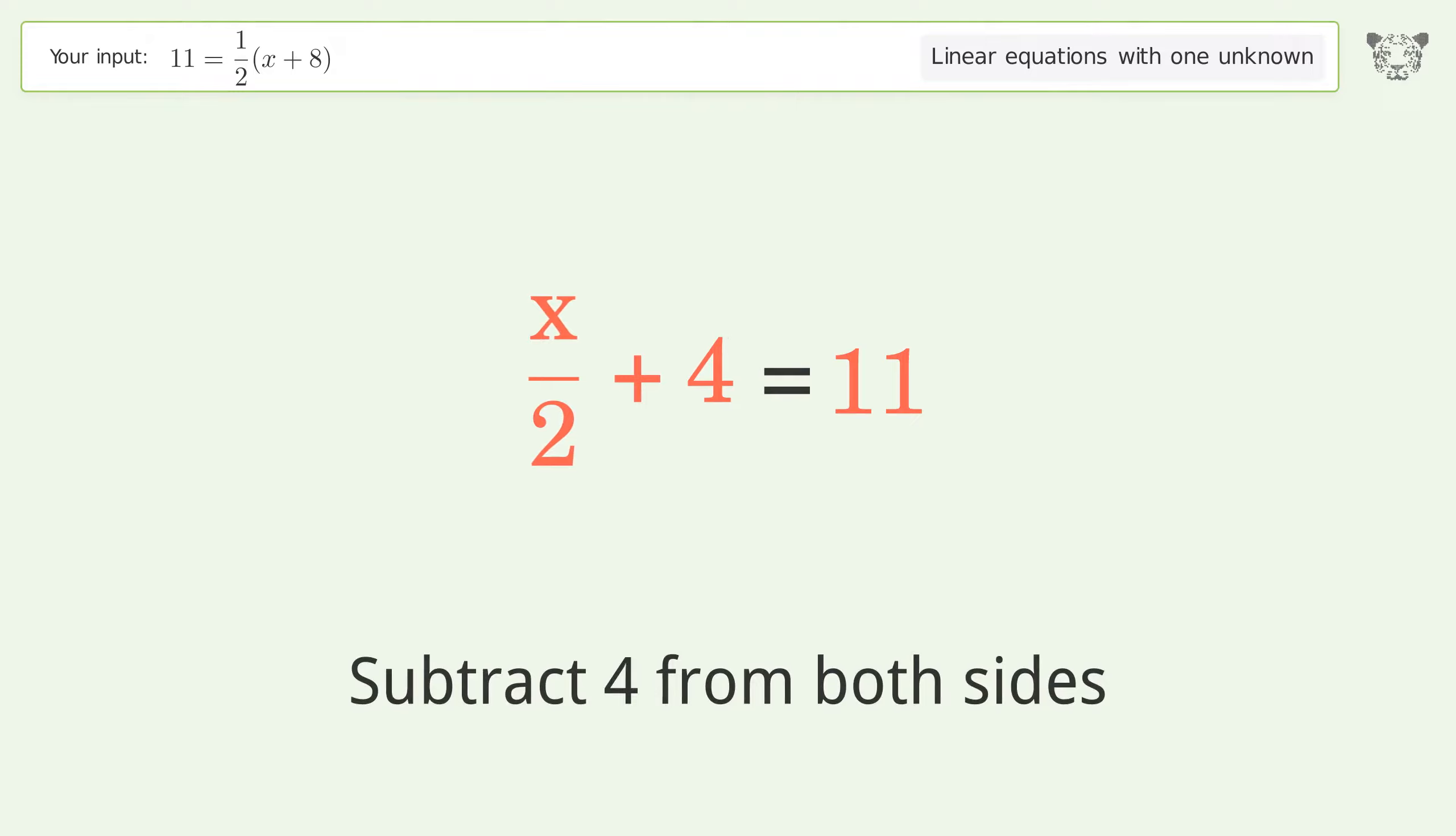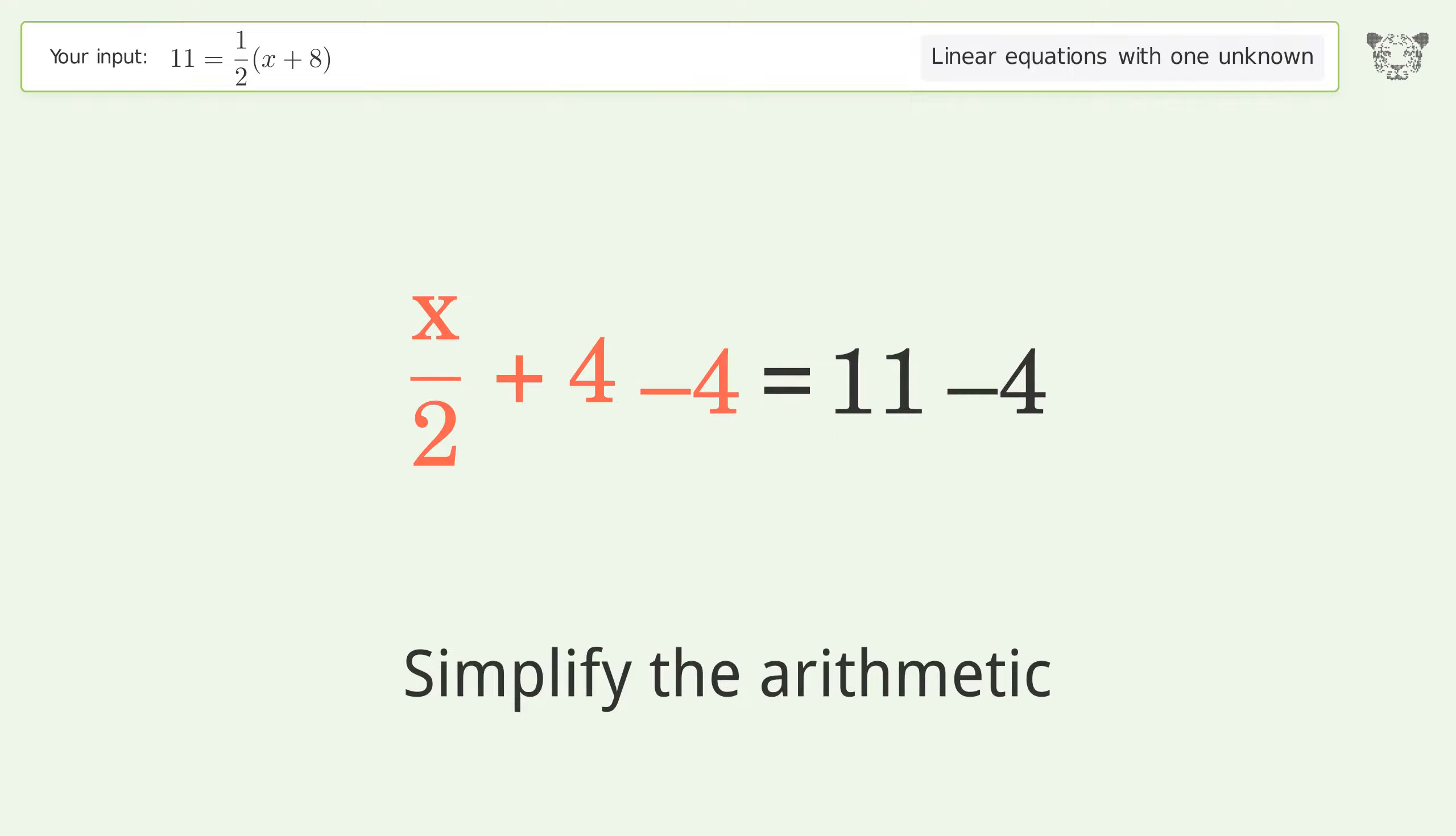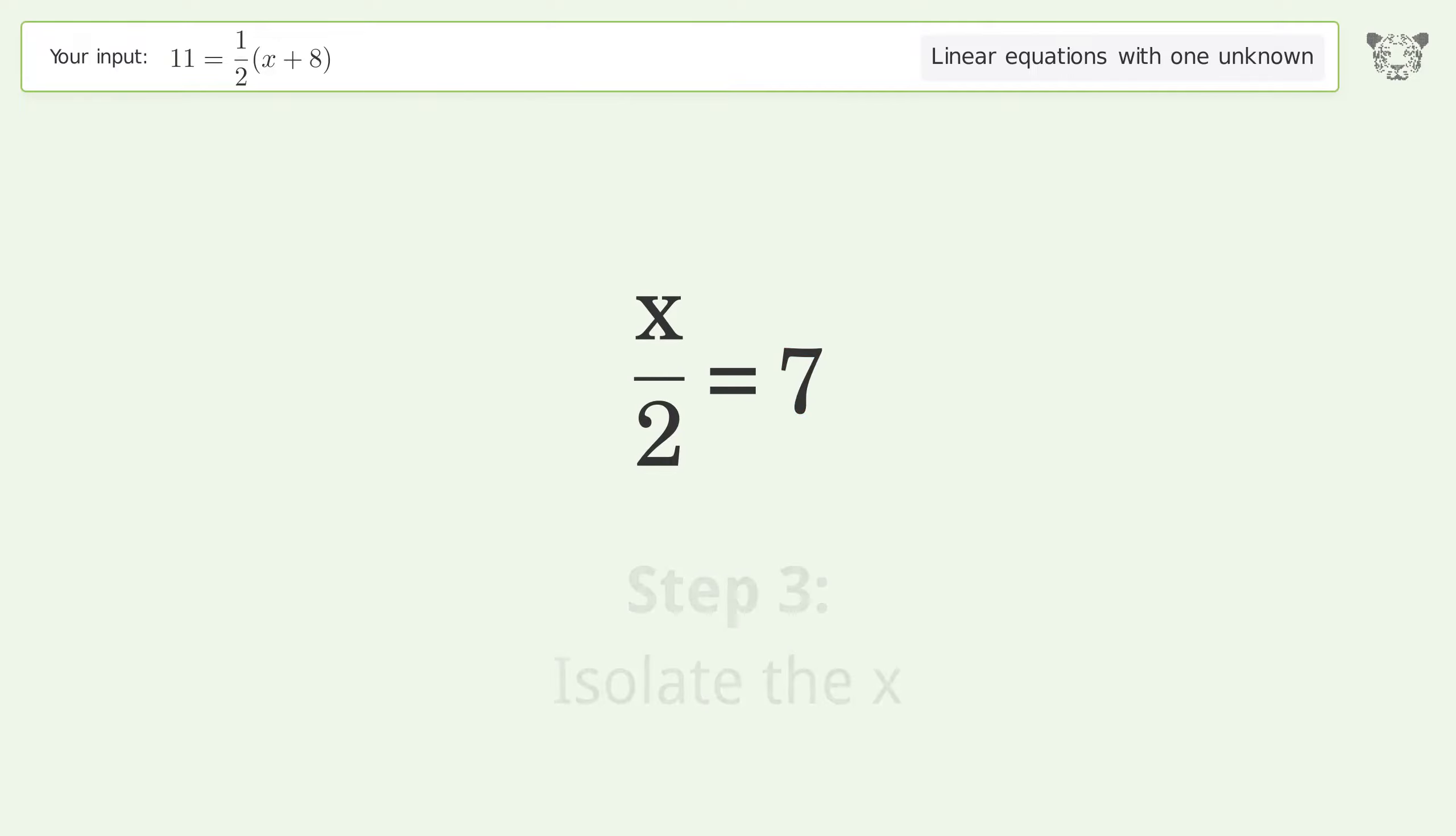Group all constants on the right side of the equation. Subtract 4 from both sides, simplify the arithmetic, then isolate the x by multiplying both sides by 2.